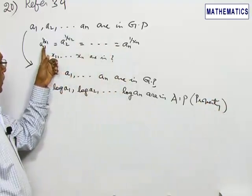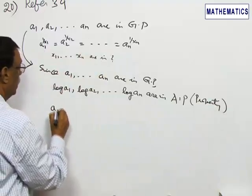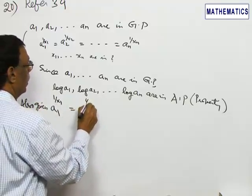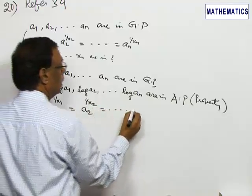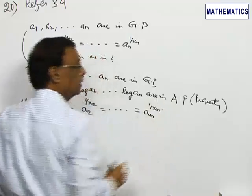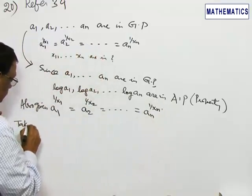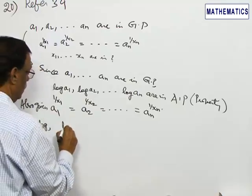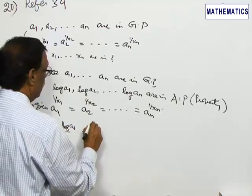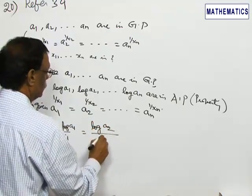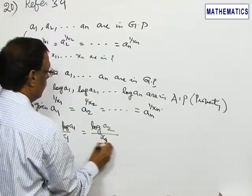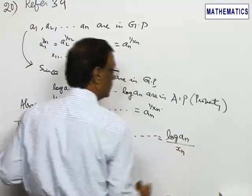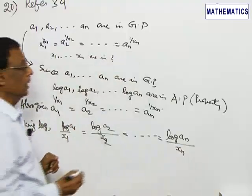Now, what is also given: a₁^(1/x₁) = a₂^(1/x₂) = ... = aₙ^(1/xₙ). Taking logarithms, we get (1/x₁)·log a₁ = (1/x₂)·log a₂ = ... = (1/xₙ)·log aₙ, which can be written as log a₁/x₁ = log a₂/x₂ = ... = log aₙ/xₙ. Each ratio is equal to some constant K.